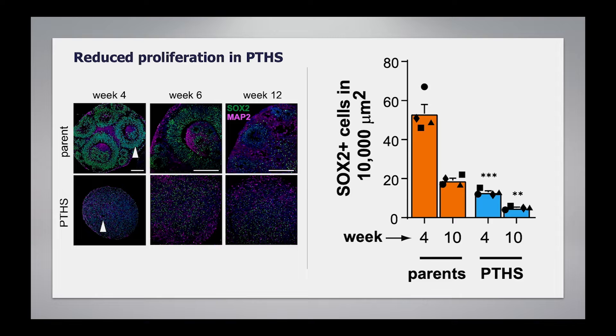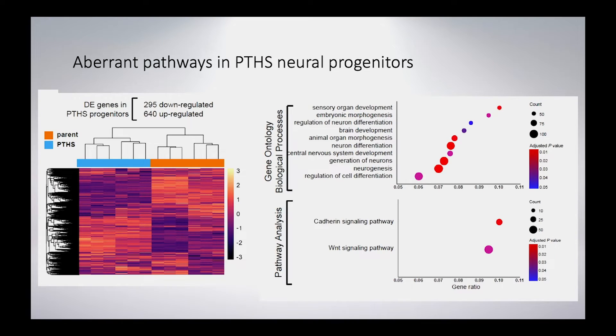Normally, you see a reduction in SOX2-positive cells between 4 and 10 weeks as cells differentiate into post-mitotic neurons. But the number we start with in mutant cells is much lower compared to controls — these proliferating cells are just not there anymore. So we turned to gene expression analysis, performing global RNA expression profiling to look for potential pathways.